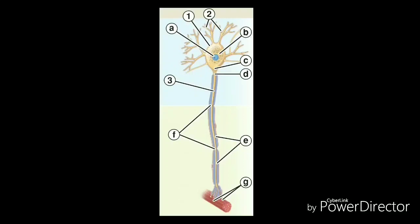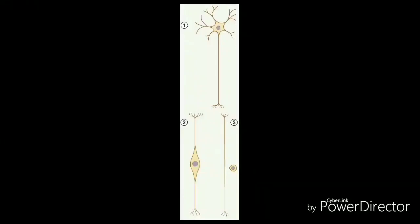The axons can also have many terminal branches, the axon terminals that are present at the end of the axons and are connected to other neurons. Based on functionality, neurons are classified into three types.